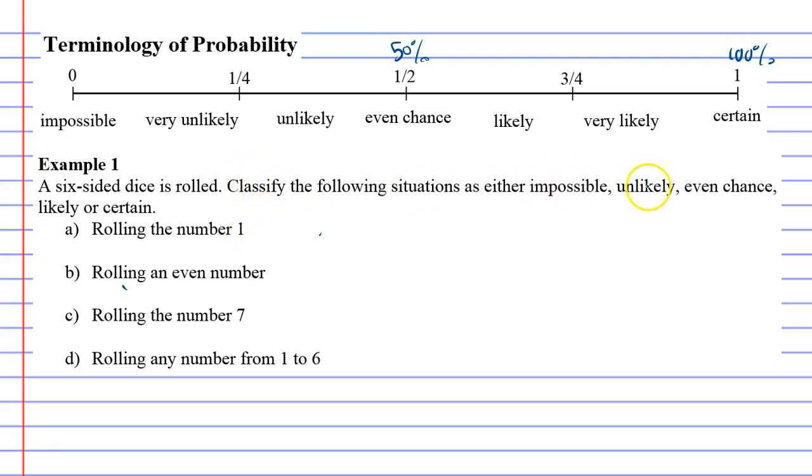Rolling an even number. If we look at a dice, the even numbers are 2, 4, and 6, which is half of the numbers. So for this one, it's an even chance, or you could even say a half chance.